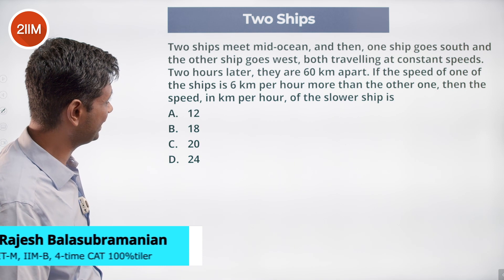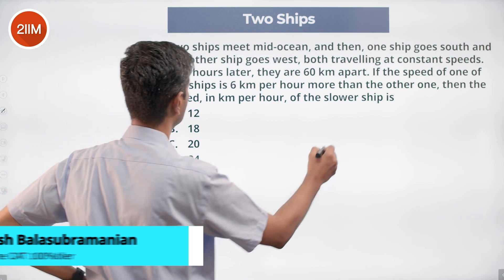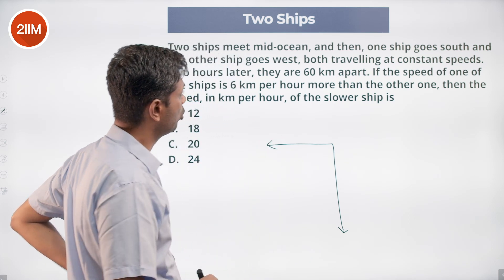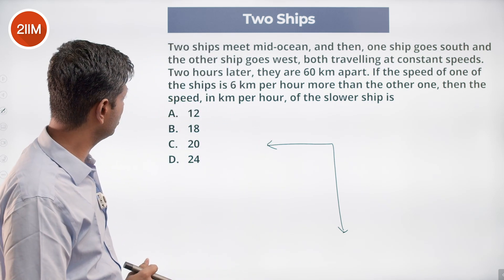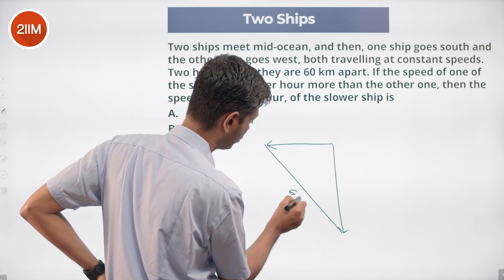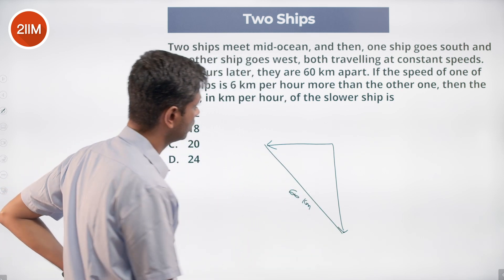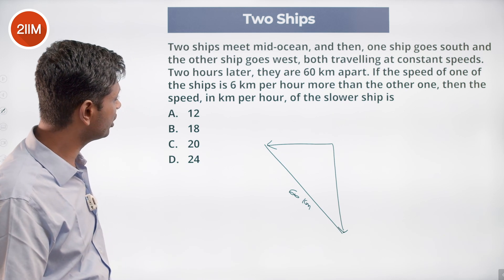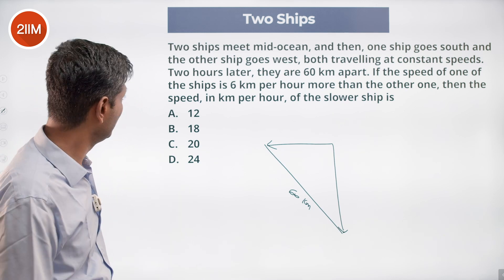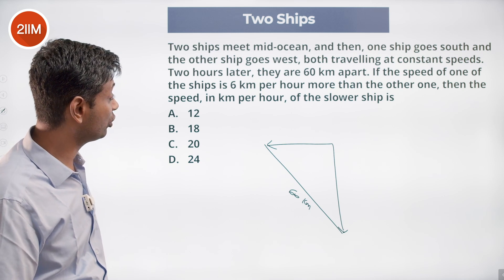Two ships meet mid-ocean, and then one ship goes south and another ship goes west, both traveling at constant speeds. Two hours later, they're 60 kilometers apart. If the speed of one of the ships is 6 kilometers per hour more than the other one, then the speed in kilometers per hour of the slower ship is...